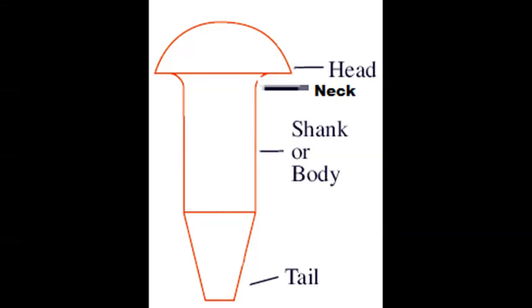Here on screen we can see a diagram of a rivet. First, look into its parts. At the top of the rivet there is a hemispherical portion which is known as the head.